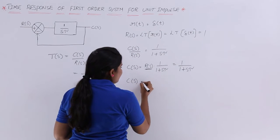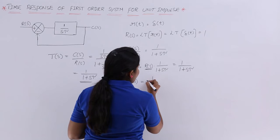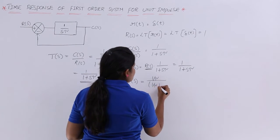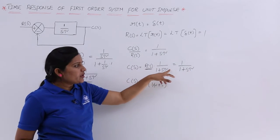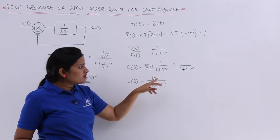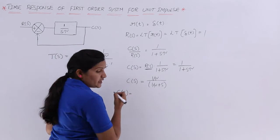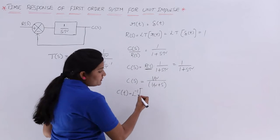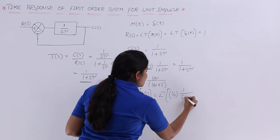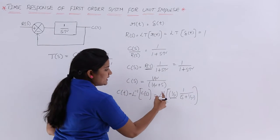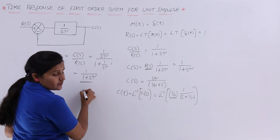Now I write C(s) in a form that is inverse Laplace transformable. I take (1/τ) as a common factor: C(s) = (1/τ) · 1/(s + 1/τ). By taking τ as common in the denominator, a factor of 1/τ comes out in front. This puts the expression in the standard form 1/(s + a), which is recognizable for inverse Laplace transformation.